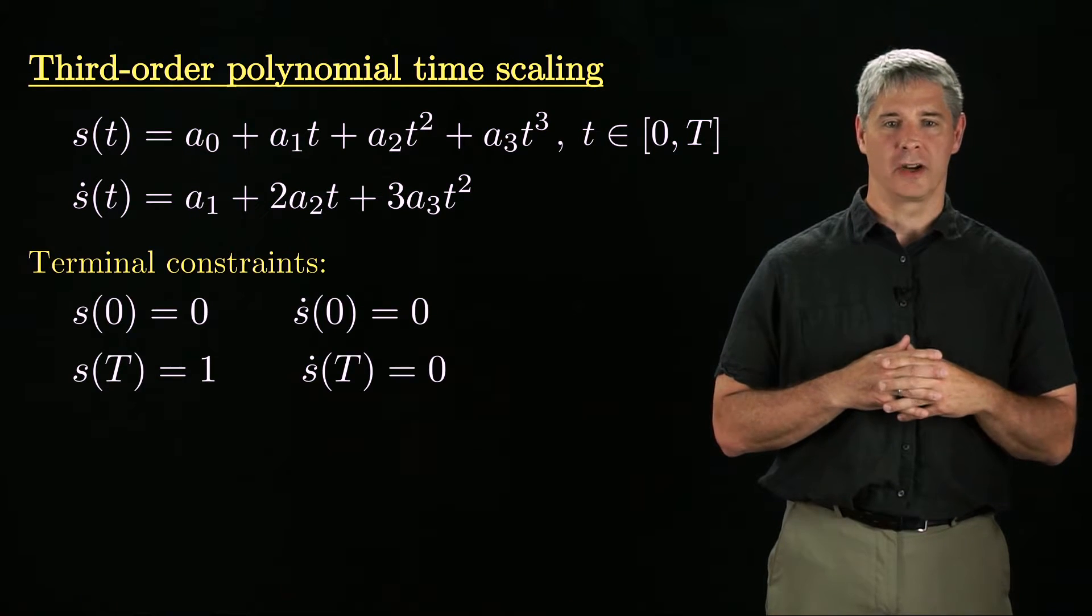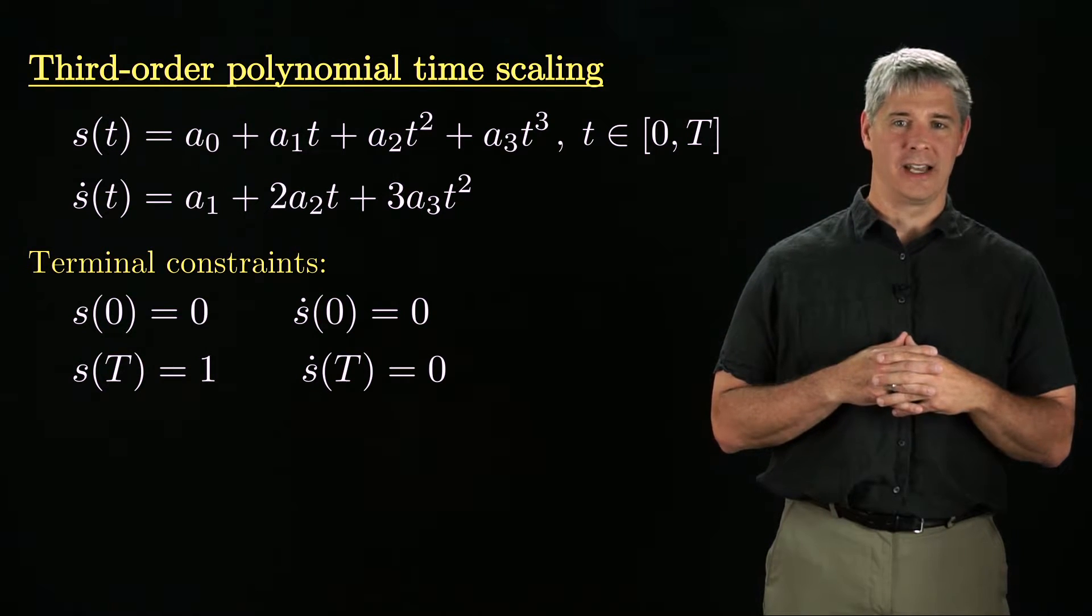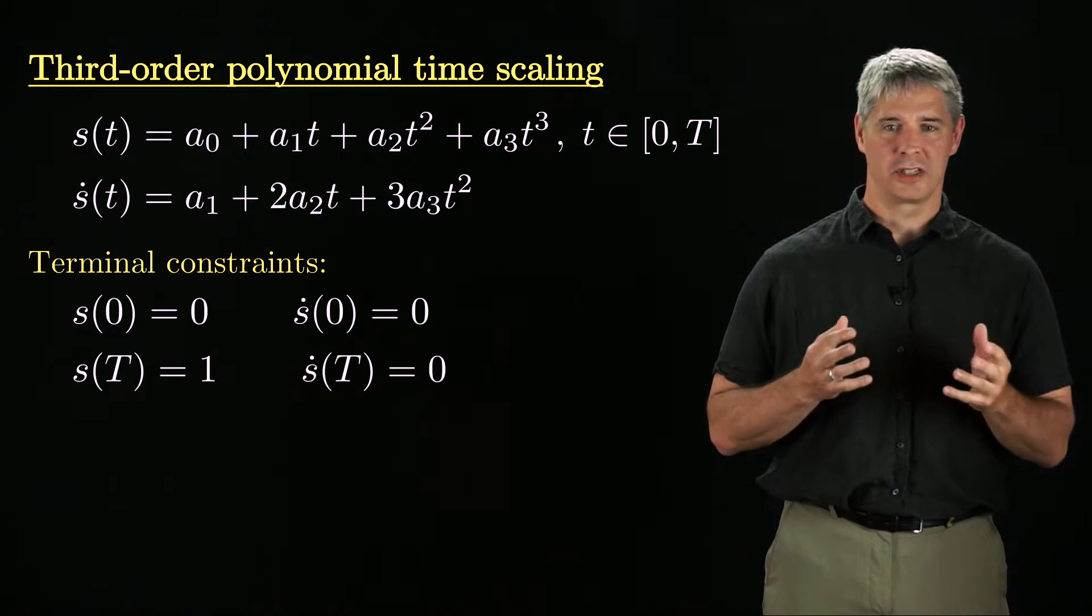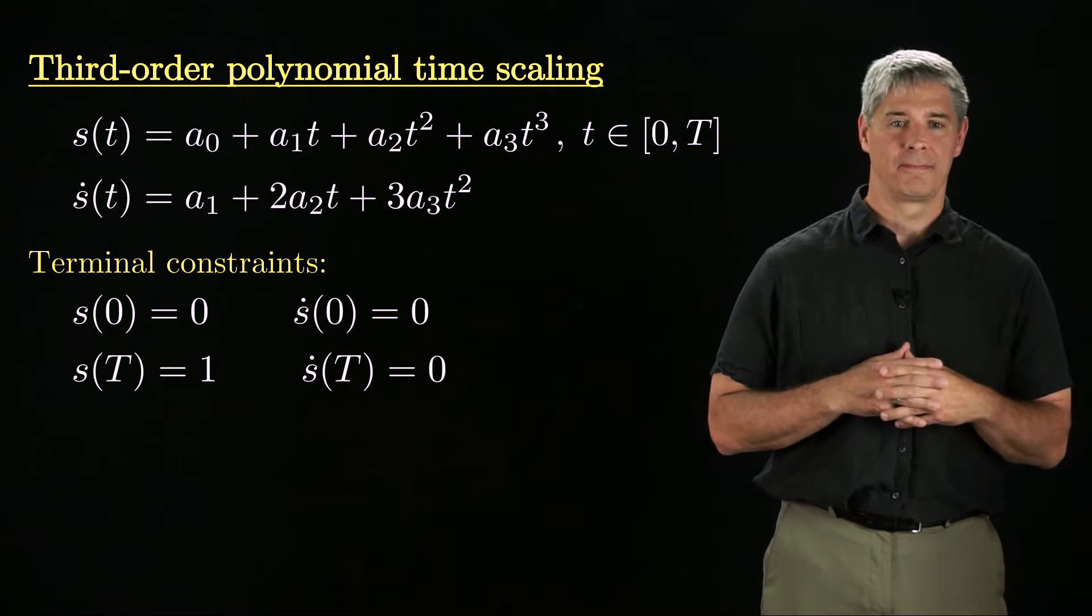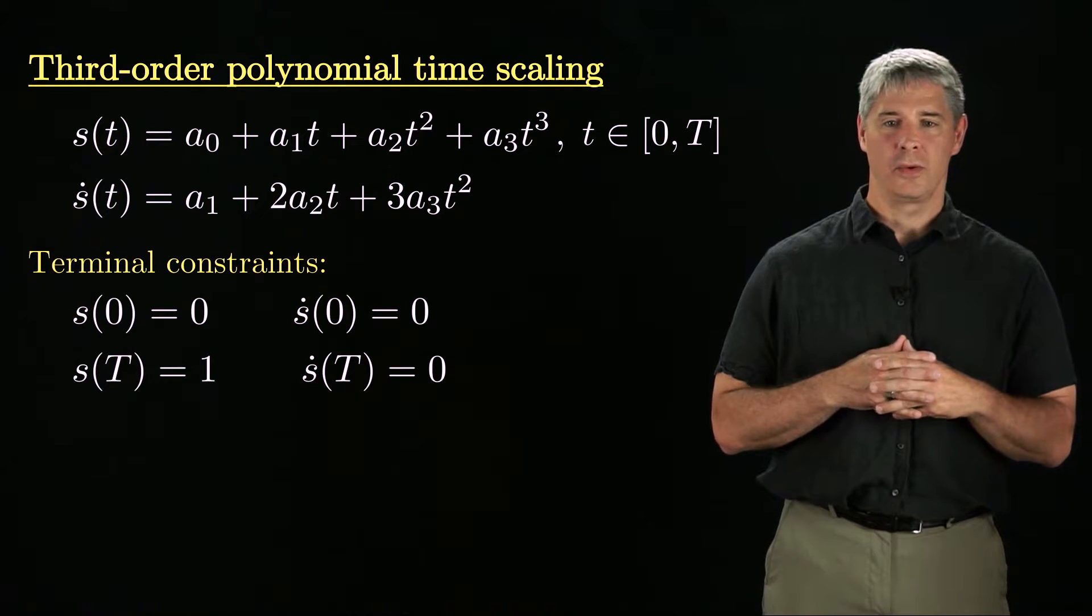To solve for the coefficients, we apply the four terminal constraints, which say that s is zero at time zero and one at time capital T, and that s dot is zero at time zero and capital T for motions that begin and end at rest. Solving for the four coefficients using these four constraints, we get these values.